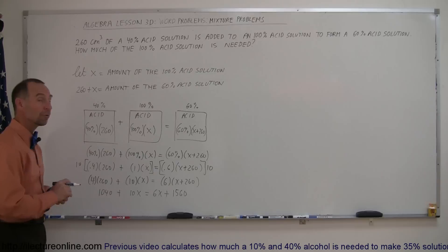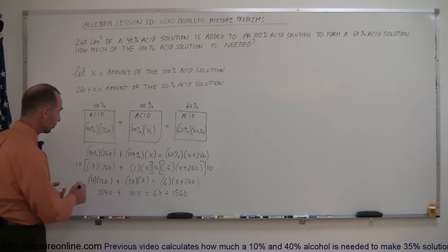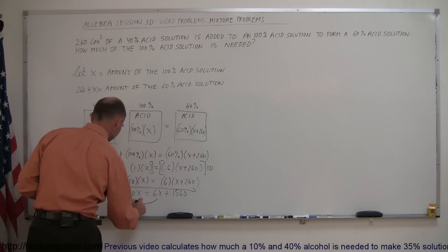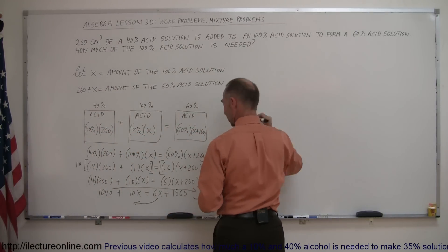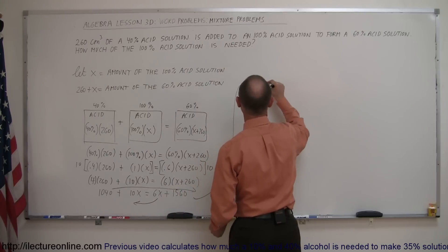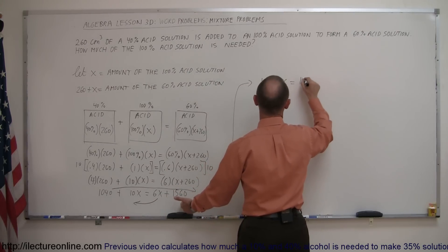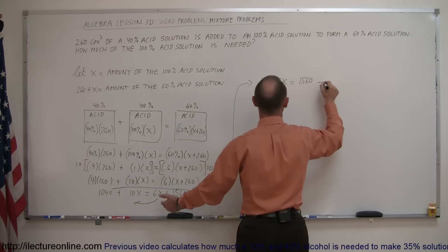Now we move all the terms without the X to the other side, so the 1,040 goes over here, and the 6X goes over here. When we do that, we end up with, on the left side, 10X minus 6X equals, on the right side, 1,560 minus 1,040.